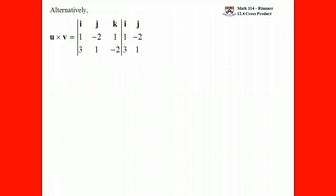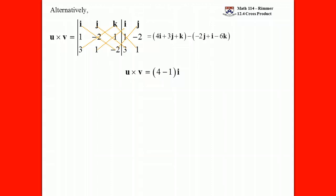Let's go ahead and work the question that way. If you prefer to do it that way, that's fine. Just copy it out of the first column and the second column, and then there's a bunch of forward-facing diagonals. Do your products along there. You'll get 4i and 3j and 1k, and then your backward-facing diagonals. Do your products along there, and then subtract the sum of your forward-facing diagonals from the sum of your backward-facing diagonals, and you end up putting the i's, j's, and k's together — all with the same 3i and 5j and 7k.